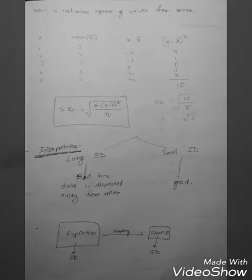How do you interpret it? If standard deviation is small, it is good. If it is large, it is bad. And standard deviation is for sample. And population is for standard error.